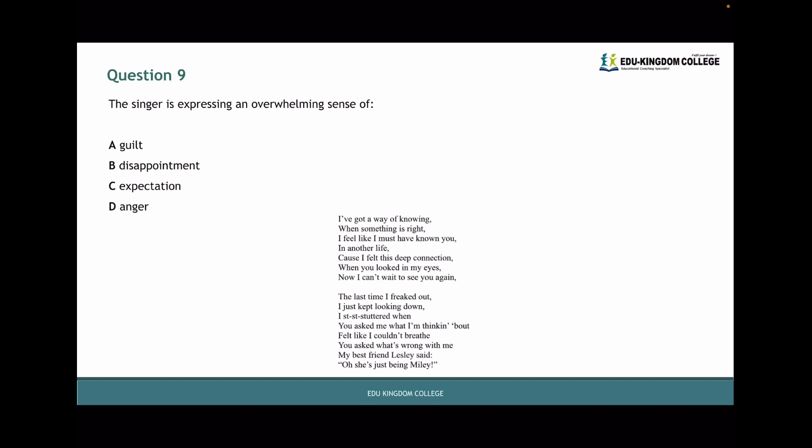Question nine. The singer is expressing an overwhelming sense of what? I wanted to look at these two stanzas specifically, because the first stanza up in the board actually shows that Miley Cyrus has this imagination. She has this expectation that she's already known this guy. She has this thing in her head that tells her, like, I've met him before in some sort of past life, and we have this deep connection. So she's expecting that as soon as she's going to talk to him properly, they're going to just click instantly. Because of that, she's got that overwhelming sense of expectation, because she is hoping. There's no negative emotions in this case, like A, B, and D.